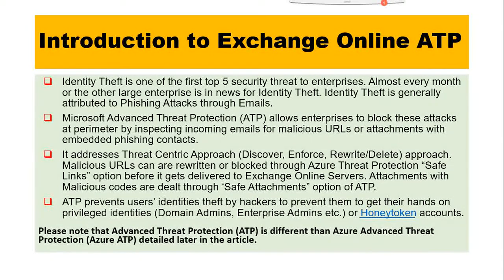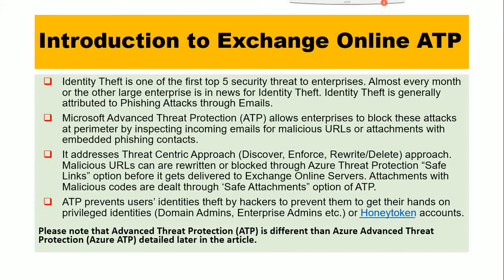I also want to clarify one more thing: when we talk about Advanced Threat Protection, Microsoft has two products. One is Advanced Threat Protection at Exchange Online, which is the topic of today's session. There is another product called Azure ATP. Slightly confusing, but this product is in preview, and Azure ATP is a product that revolves around your Active Directory, which could be on-premises or in the cloud.